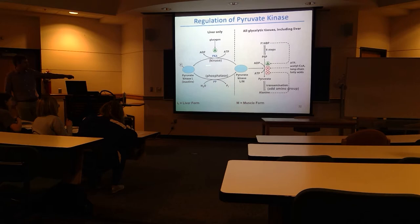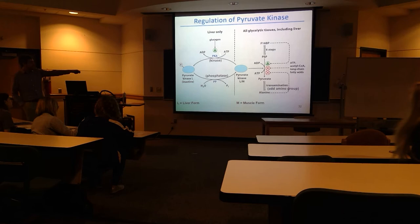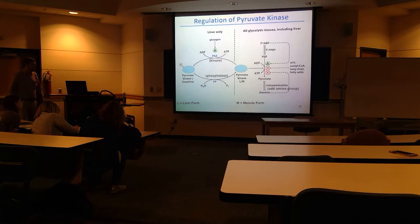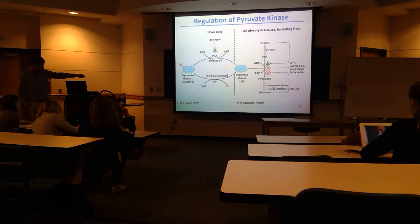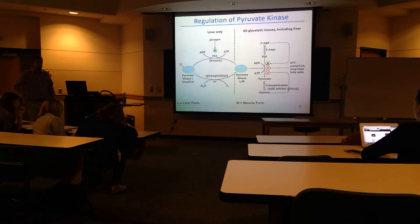So when glucocorticoids — or rather glucagon — levels are high, that's going to activate a kinase called PKA, a very common signaling kinase. That will phosphorylate pyruvate kinase causing it to be inactive, shutting down glycolysis. And remember, this is just in the liver.